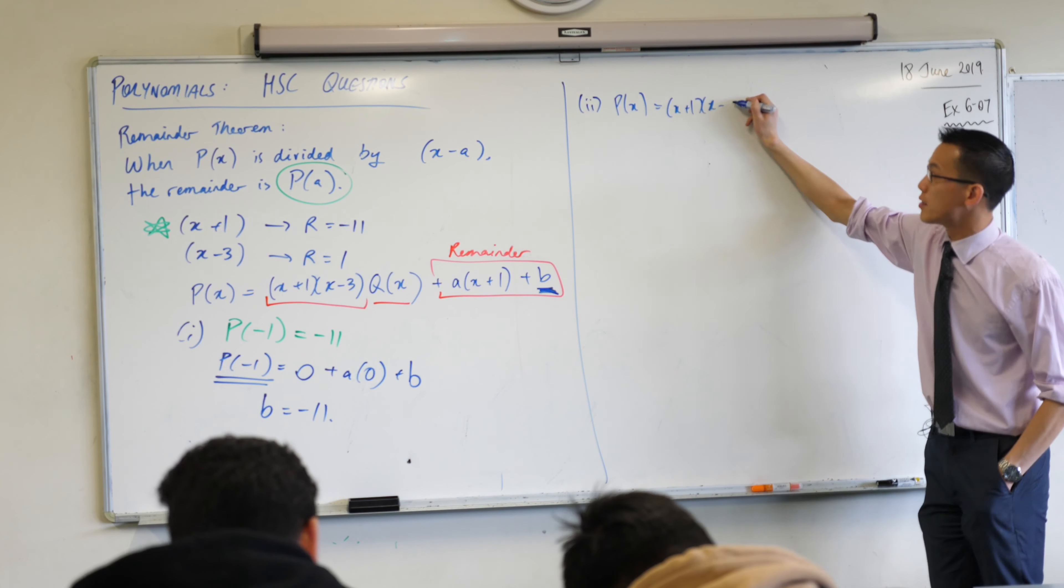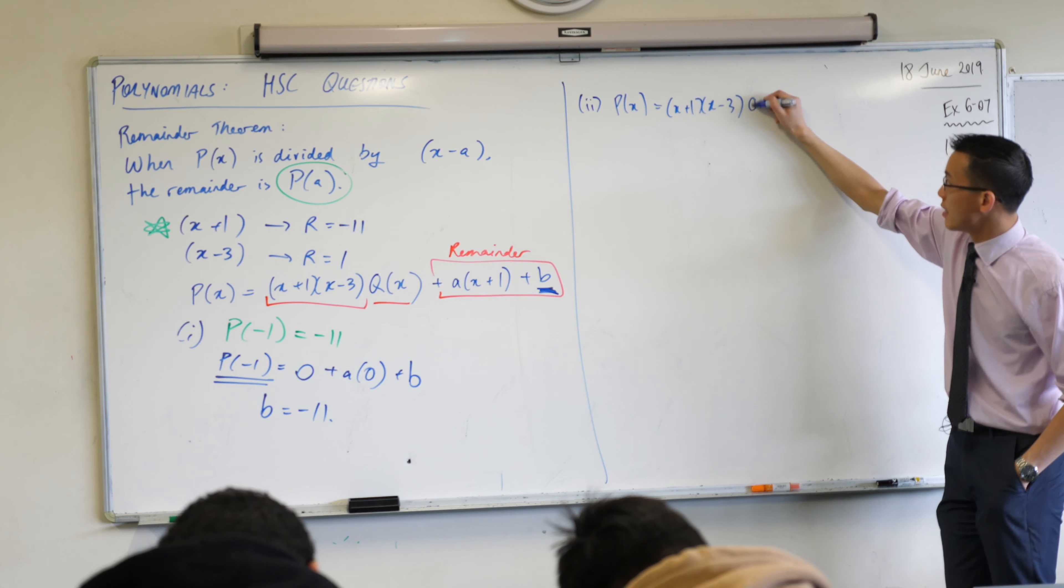So what I'm going to do is rewrite it now that I know what B is. This is part 2: P(x) equals (x+1)(x-3) - here's my quotient which I have no idea what it is, but I actually don't need to know - and then here's my last little bit hanging on here, minus 11. Now I've so far already used this fact, so what's the other fact that I haven't used yet? This one here. So to use this with the remainder theorem, I'm going to evaluate P(3).